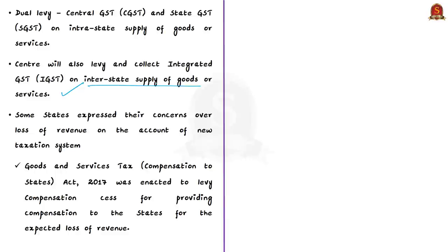Since this was a new taxation system, states — mainly the producer states — had expressed their concerns over the loss of revenue. To address this loss of revenue, the central government enacted the Goods and Services Tax Compensation to States Act of 2017. It was enacted to levy the compensation cess for providing compensation to the states for this expected loss of revenue. We have discussed this act and the compensation cess in our July 29, 2020 news analysis.